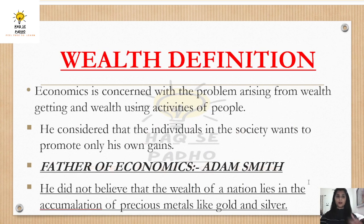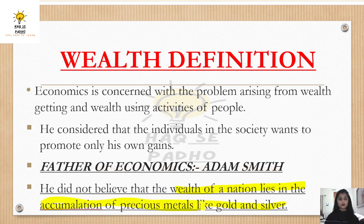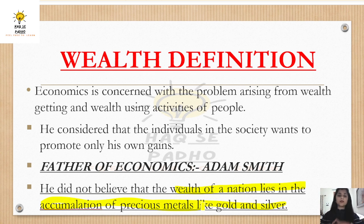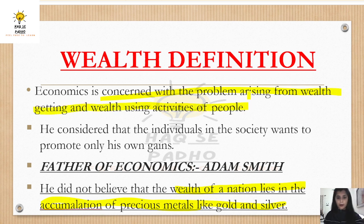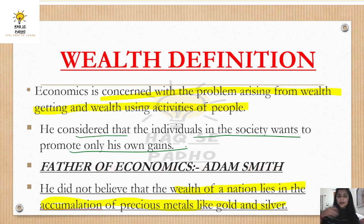Wealth doesn't mean accumulating gold and silver in your home. Accumulation of precious metals does not increase the nation's wealth. Wealth increases when you create goods and services for the country and circulate and distribute them — then money circulates and wealth is generated. Economics is concerned with the problem arising from wealth-getting and wealth-using activities of people. Adam Smith considered that the individual in society wants to promote only his own gain.